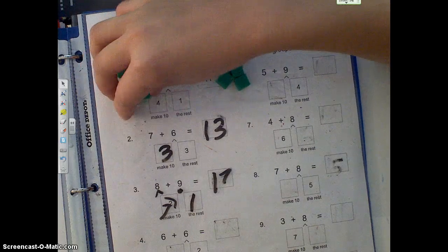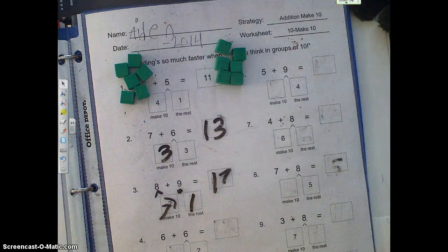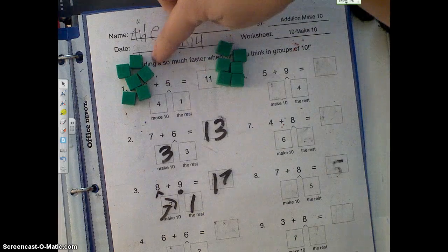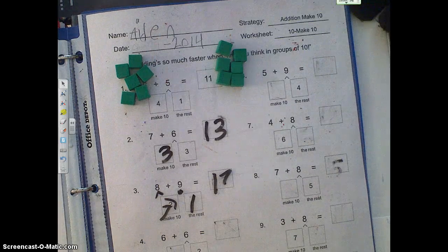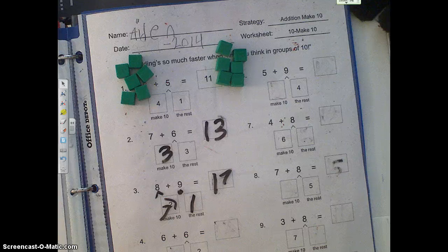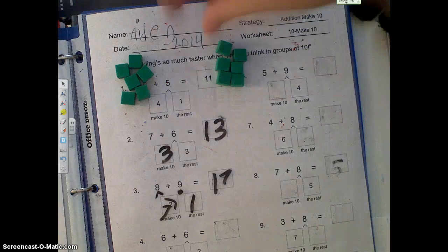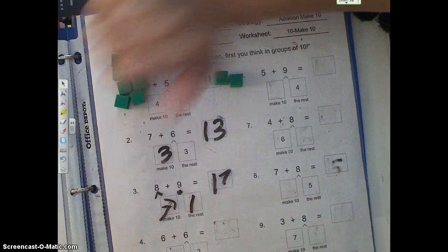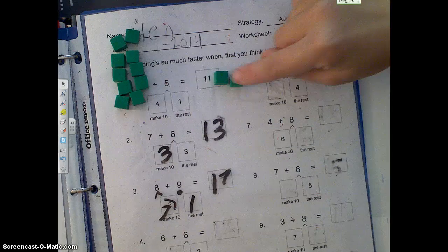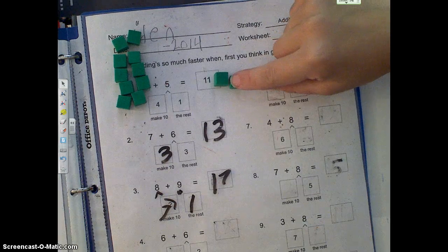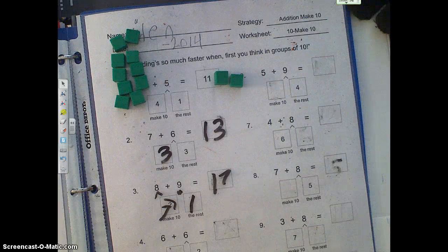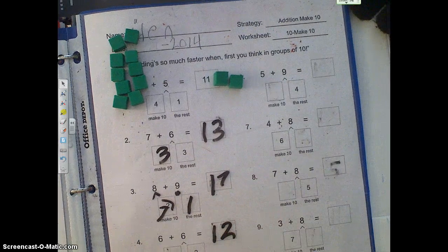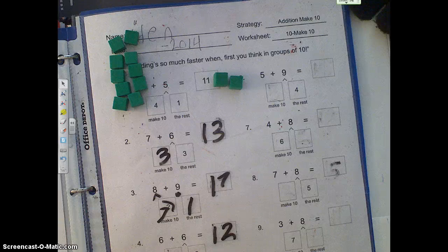So we have 6 over here and we have 6 over here. We'll just start with this one because that's what it's telling us to do. 6 plus what equals 10? 4. 4. So we take these 4, we put them over here, and we made this 10. 10 plus the rest equals what? 12. 12. So you put 12 here. Okay, and what do we, how many did we bring over? 4.